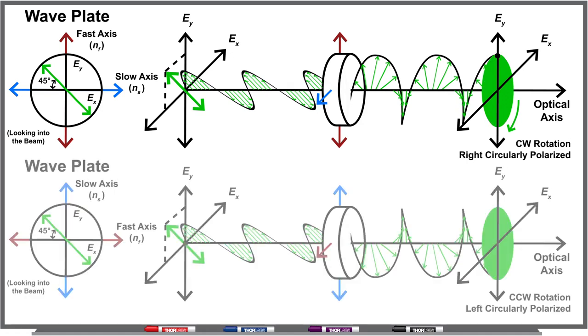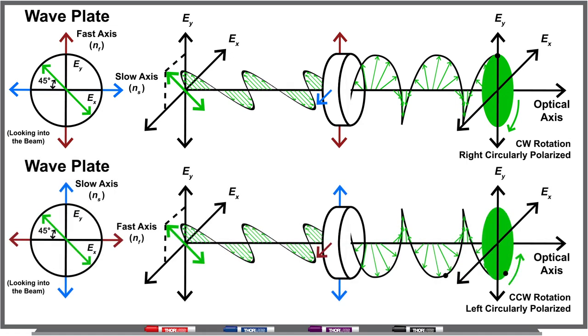When the fast axis is horizontal, as shown at the bottom, the component of light parallel to the vertical axis is delayed more, and this reverses the direction the circularly polarized light rotates. The light becomes left circularly polarized.